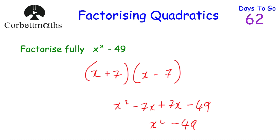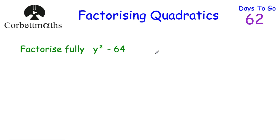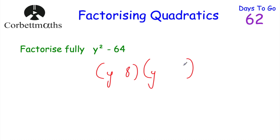Here's a difference of two squares question for you to try: can you factorise y squared minus 64? Because y squared and 64 are both perfect squares, you can write two brackets with y at the front of each, then 8 and 8, with one plus sign and one minus sign. So the answer is y plus 8 times y minus 8. If you expand those brackets you get back to y squared minus 64.